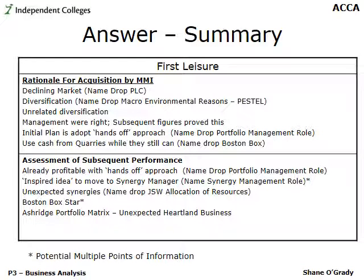This slide provides a quick summary of potential points of information for the First Leisure part of your answer. There are eleven issues here, and two — marked with an asterisk — could provide multiple points. There are far more potential issues than required to get maximum marks. The First Leisure part is more difficult, and within it, the rationale for the acquisition is harder than the assessment of subsequent performance. Beware of becoming bogged down in the rationale section and consuming time needed for later, easier parts.